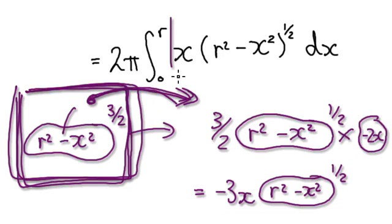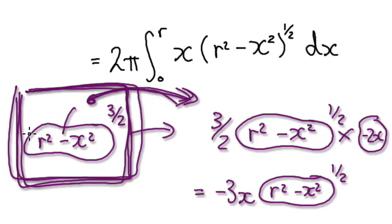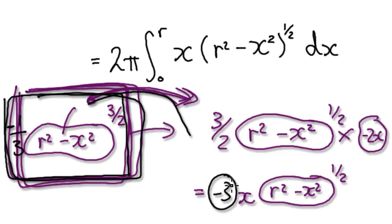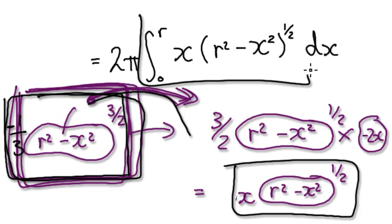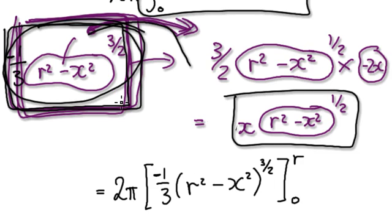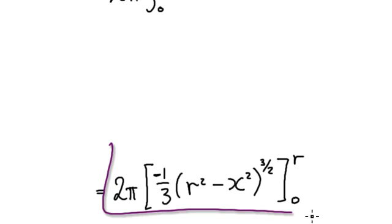So when you make this to be your initial guess and differentiate it, it gives you this thing here. This thing here is very close — in fact it's exactly the same — you've got your x here. But the only thing that's different is this minus 3. So let's make the adjustment to our initial guess: we should multiply by negative a third. If you make this your initial guess with negative a third in front and differentiate it, the negative a third will negate this negative 3, giving you exactly what you want. So if you integrate the original expression, it gives you negative a third times (r² minus x²) to the 3/2.